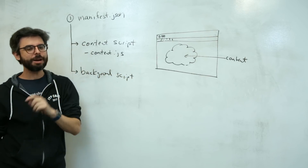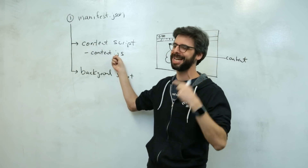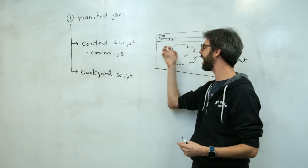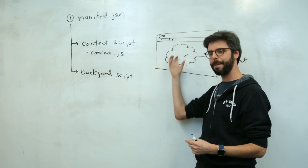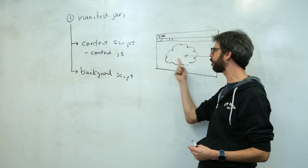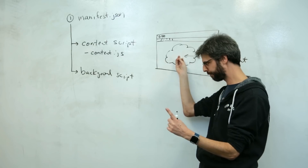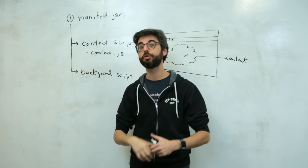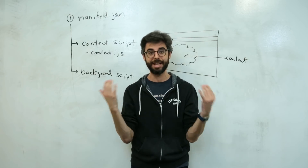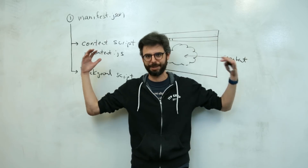A background script can do a lot of things. The content script is code that executes after a web page loads, that you can effect and manipulate and work with the actual content of the web page itself. A background script is a script that loads when you launch Chrome, and it's listening for events associated with the activity of using the Chrome browser as a piece of software itself.